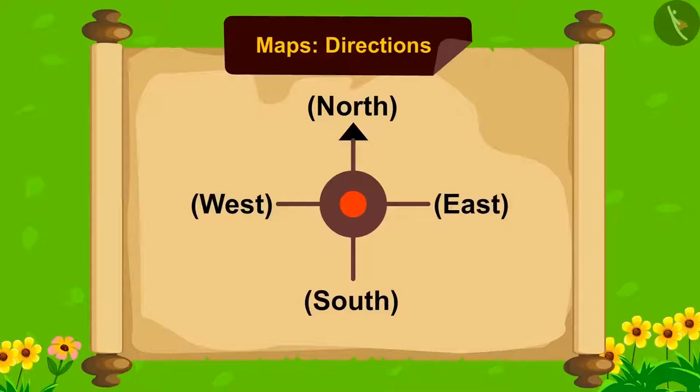Look, this is called a compass. Using this, we can determine the directions on any map. There is an arrow like this on it. The head of it always points towards the north.